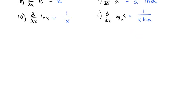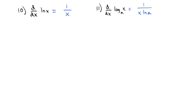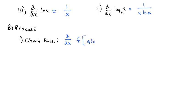With these formulas, we combine those 11 formulas with three main processes to take the derivative. The first process was the chain rule. The chain rule says that if we want to take the derivative of some function with a function inside it, we take the derivative of the outside function, leaving the inside the same, times the derivative of the inside function.